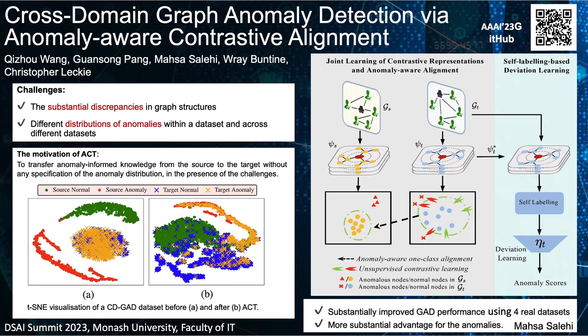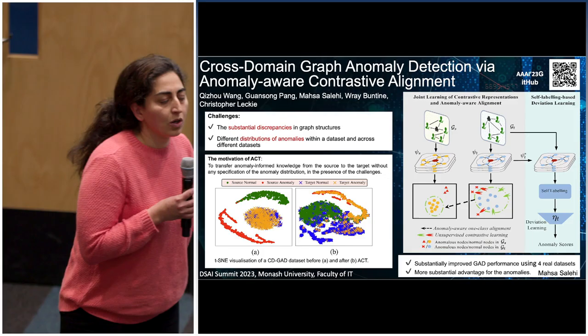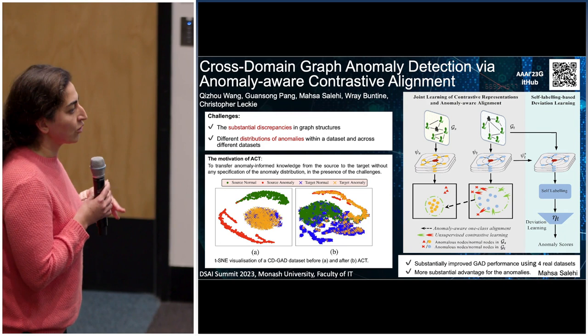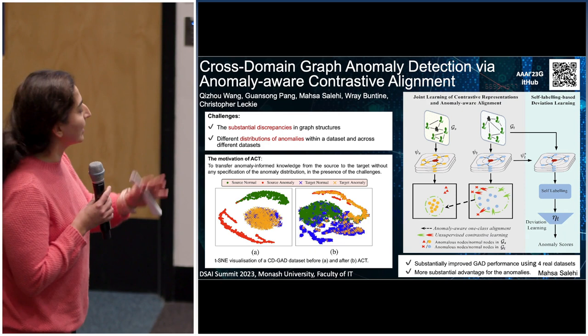In this paper we propose a new domain adaptation technique. As shown in the plot, on panel A there is a discrepancy between source anomalies and target anomalies and also the normals, but with our proposed method you can see very good alignment between the two domains. It aligns the normal class in source and target using contrastive learning and graph structure, achieving good results. Please come to the poster.